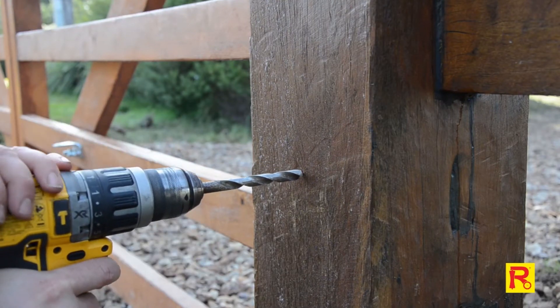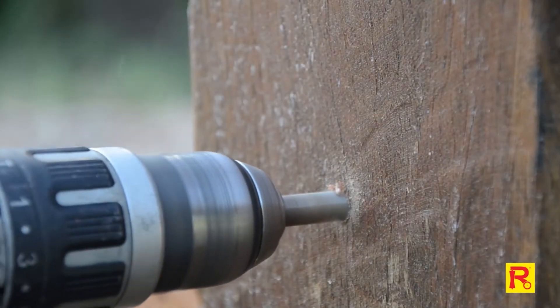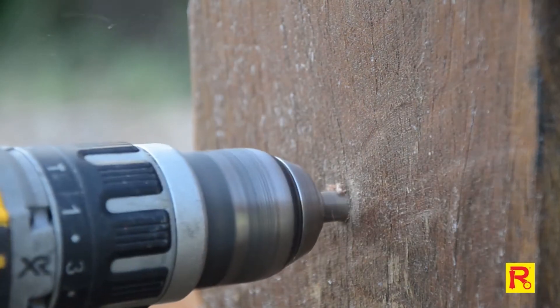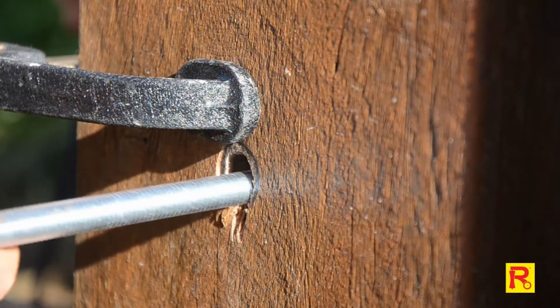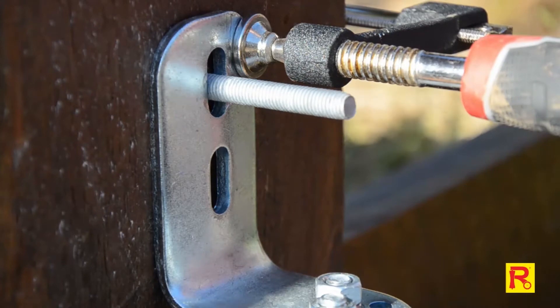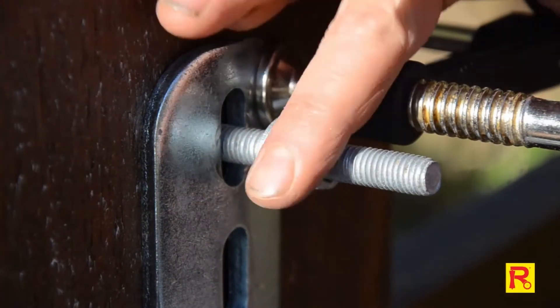Once you have drilled holes all the way through your post, clamp the pivot bracket back onto the post and insert the supplied 200mm bolts and hand tighten.